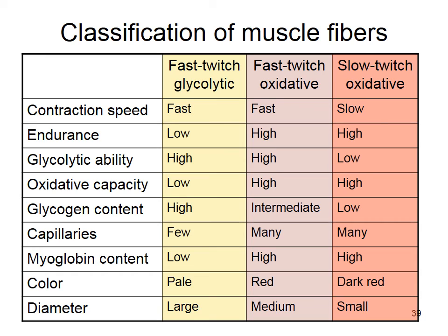For couch potatoes, when muscles are not trained or used, muscle fibers default to fast twitch glycolytic — not the large, trained kind, but small ones with few mitochondria and few capillaries. They're cheap to maintain at rest but when used, they go anaerobic immediately, causing rapid fatigue and soreness the next day. You can switch between fiber types.